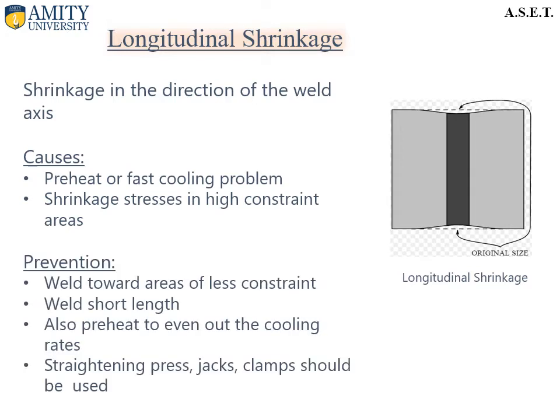Here we can see longitudinal shrinkage of the material. Shrinkage in the direction of the weld axis is known as longitudinal shrinkage. The main causes are preheat or fast cooling problems, and shrinkage stress in highly constrained areas. It can be prevented by welding toward areas of less constraint, using short weld lengths, preheating to even out the cooling rate, and using straightening, press jacks, and clamps.